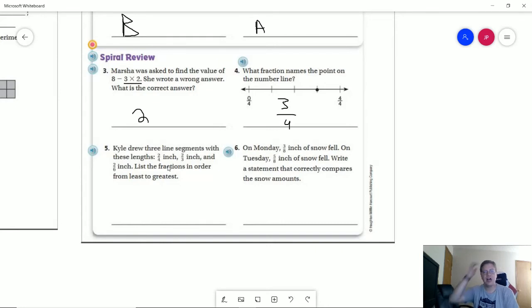Number 5, we have three line segments. And so one of the things when I was relaying this is if we have the same numerator, the same number on the top, which tells us how many parts we're counting, the larger the number is on the denominator, the smaller the piece is going to be.